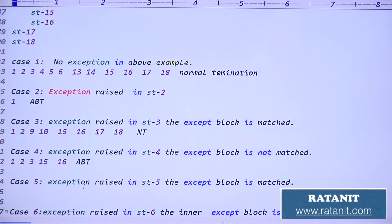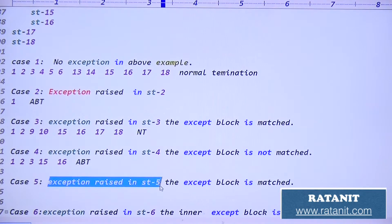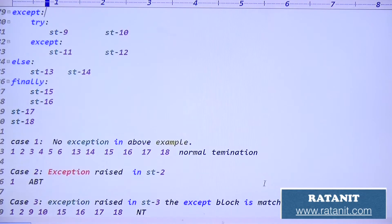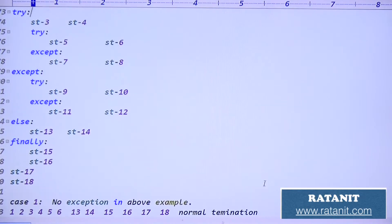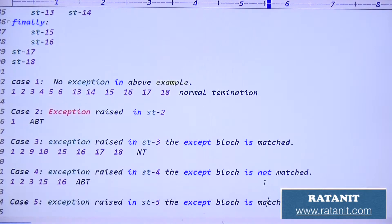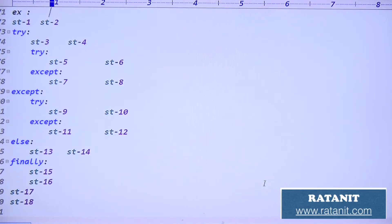Case five: exception raised in statement five, except block is matched. Up to 4 is executed: 1, 2, 3, 4. Statement five raises an exception. Five is in the inner try - first priority goes to inner except.